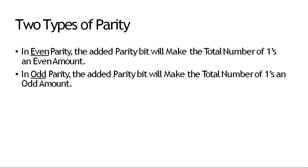अब दो type की parity है: even parity है और एक odd parity है। Even parity में added parity bit will make the total number of ones an even amount — जो total number of ones को even कर देगी वो even parity है, और जो total number of ones को odd कर देगी वो odd parity है।